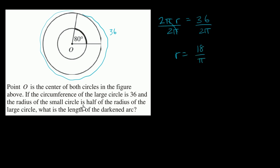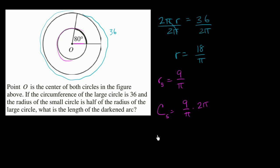The smaller circle has a radius half of the larger circle's radius, so the smaller circle's radius is 9 over π. The circumference of the smaller circle is its radius, 9 over π, times 2π. Pi divided by pi cancels, and 9 times 2 equals 18. So the circumference of the smaller circle is 18.